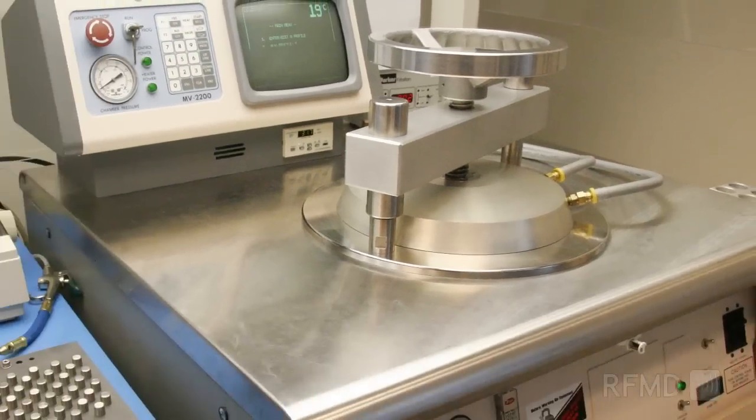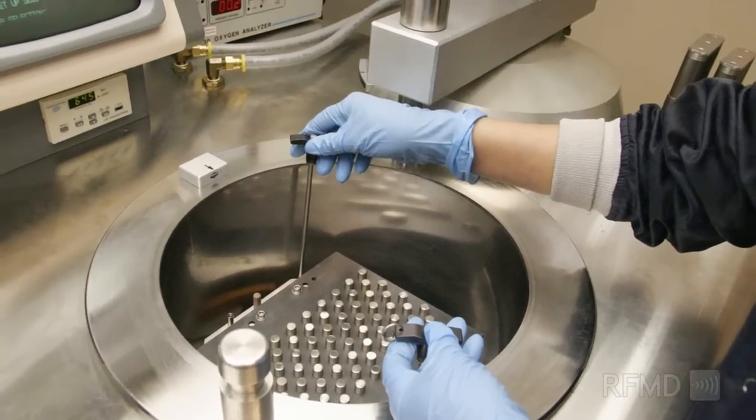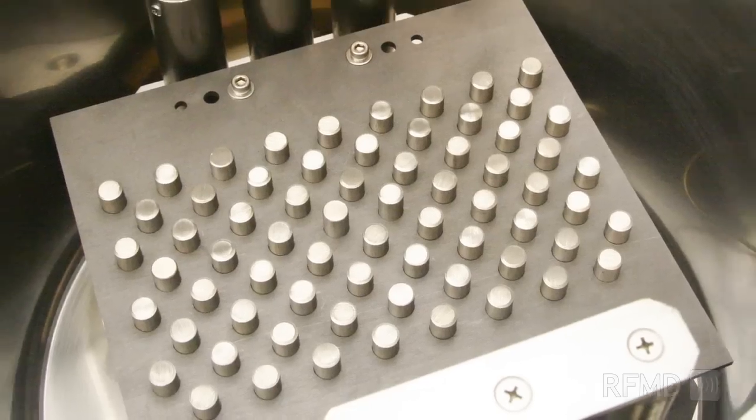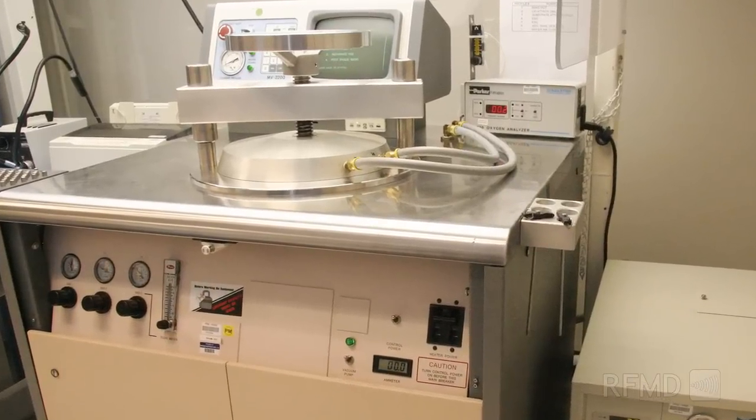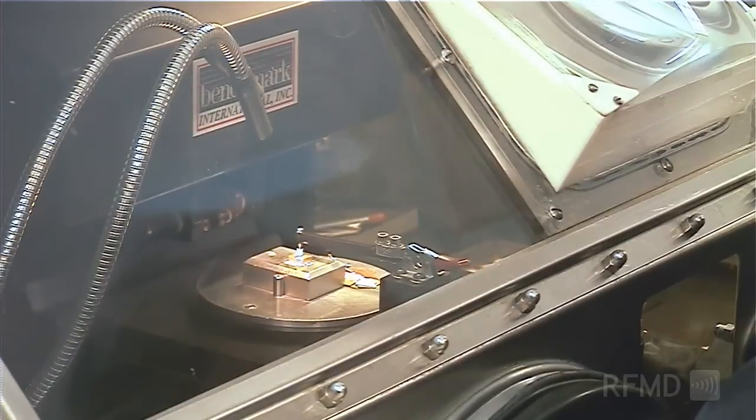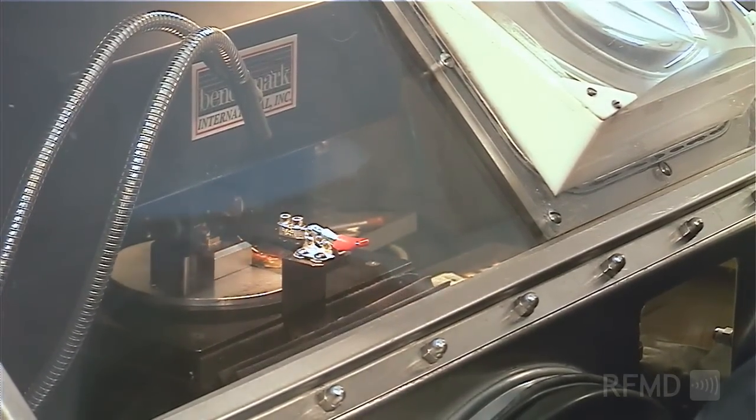The sealing process environments include vacuum bake and inert sealing atmosphere with tracer gas for leak testing. RFMD also has a complete capability supporting mil standard or commercial fine and gross leak testing.